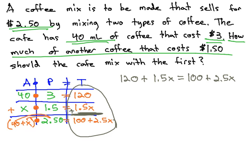We now have an equation we know how to solve. We get the variables on one side by subtracting 1.5x. This gives us 120 equals 100 plus x.